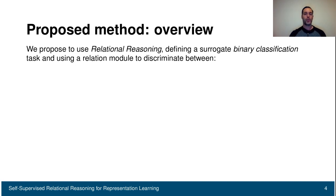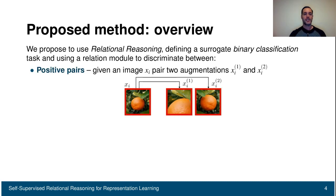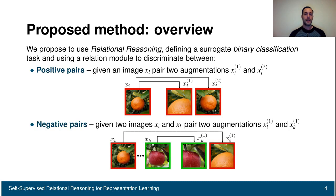In our case, we propose to use relational reasoning. We define a surrogate binary classification task and use a relation head to discriminate between two sets of data. We have positive pairs, generated by randomly sampling one image and creating two augmentations — for instance, by random crop or horizontal flip — and negative pairs, generated by randomly sampling two different images, performing augmentations, and pairing images across them.